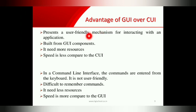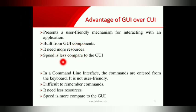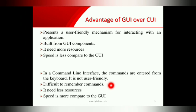Advantages of GUI over CUI: the operating system you are using is GUI-based, meaning icons, menus, and buttons are there that you can easily manipulate with the help of a mouse. GUI presents a user-friendly mechanism for interacting with applications; it is built from GUI components. However, it needs more resources and speed is less compared to CUI. In command line interface, commands are entered from the keyboard; it is not user-friendly and commands are difficult to remember, but it needs less resources and speed is more compared to GUI.